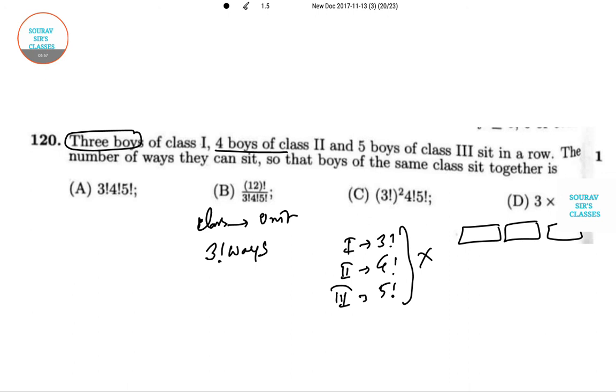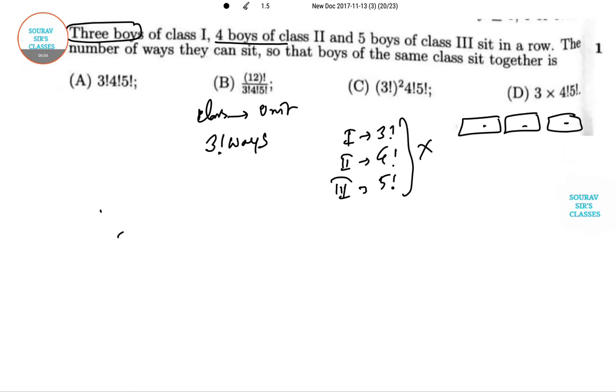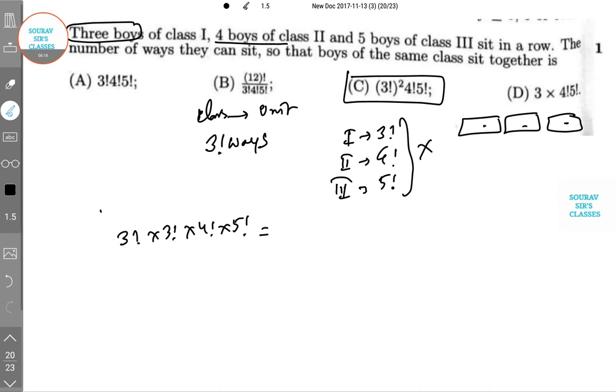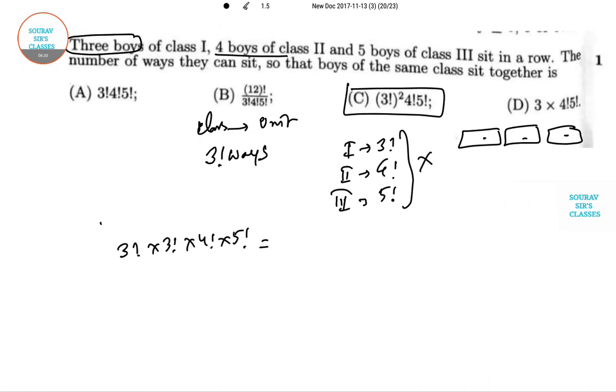So the final value is 3! × 3! × 4! × 5!, which is equal to yes, option number C. It's very easy once you know the trick.